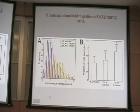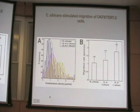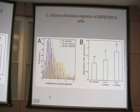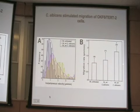When we compared the migration rate of cells moving under different conditions, we could show that untreated cultures move at an average of one micron per minute, whereas cultures treated with Candida albicans for six hours showed an increase of about two microns per minute.